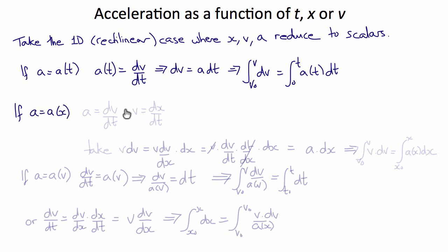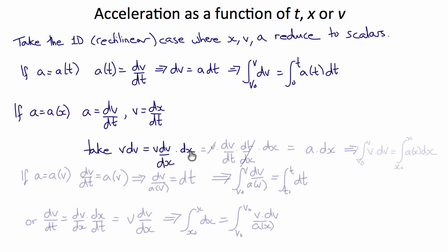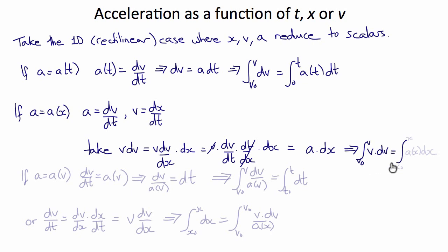If a is a function of x, we make use of the fact that a = dv/dt and v = dx/dt. Computing v dv and expanding using the chain rule gives v dv/dx · dx, and since dt/dx = 1/v, that cancels with v leaving dv/dt = a dx. Integrating this, the integral from v₀ to v of v dv equals the integral from x₀ to x of a(x) dx.